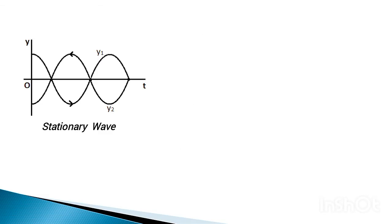Next, we will find the positions of nodes and antinodes in the standing wave. At some points the vibration is completely destroyed and the amplitude of vibration is zero — points 1, 2, and 3 have zero vibration and these are known as nodes. There are also points which oscillate with maximum amplitude; these are known as antinodes.